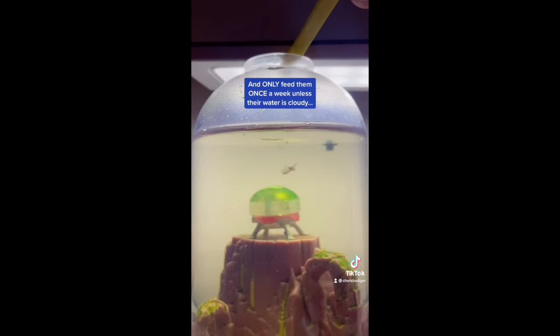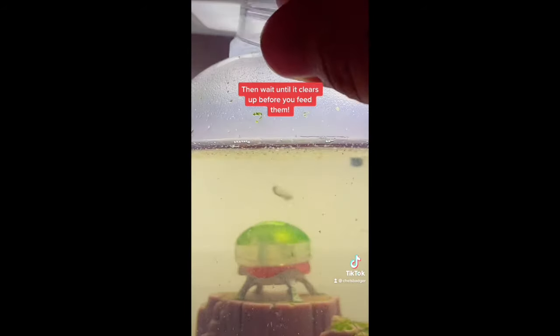To ensure your sea monkey babies survive, keep their tank away from any direct sunlight such as in front of windows, and only feed them once a week unless their water is cloudy, then wait till it clears up before you feed them.